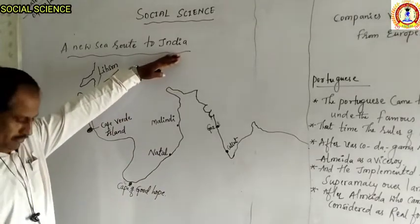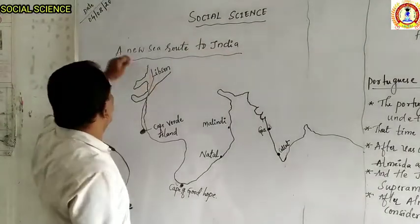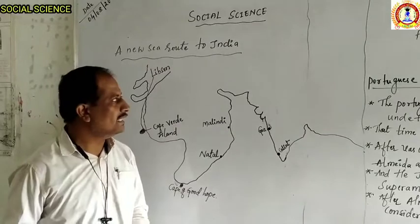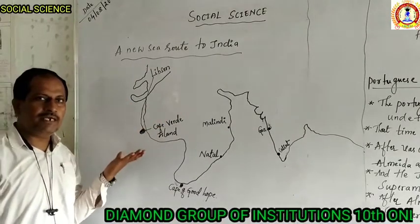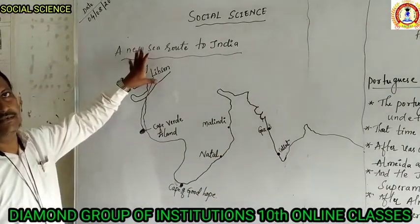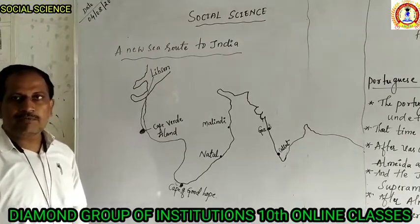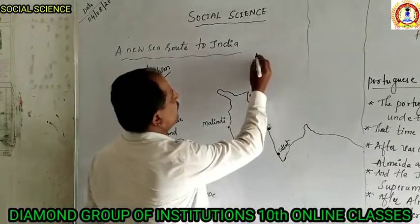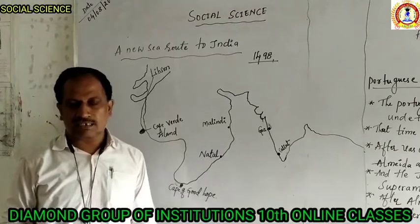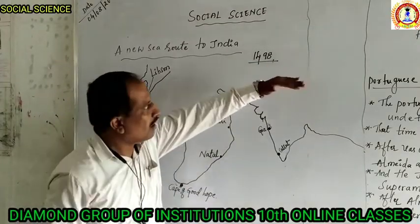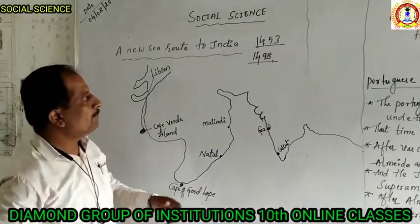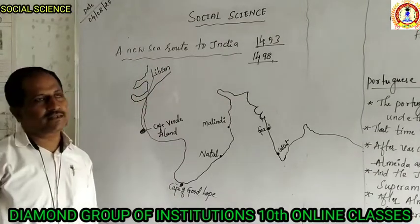Children, we have studied the search for a new sea route to India by European sailors. I will show a map of how the Europeans came towards India. One important person visited India first time in 1498 — already we have studied about Vasco da Gama. After the problem in 1453 at Constantinople, the Portuguese sailors started to develop a new route to India.